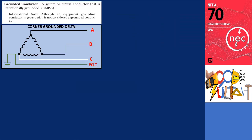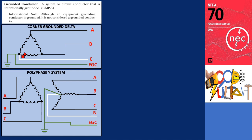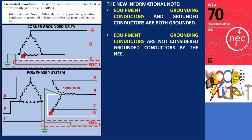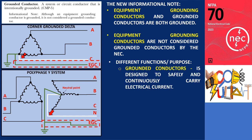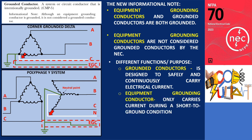The grounded conductor refers to a system or circuit conductor intentionally connected to the ground. In the provided illustration, a corner grounded delta configuration is depicted where phase C is connected to the ground; therefore, conductor C serves as the grounded conductor. Another illustration showcases a polyphase Y system, where the neutral conductor is the conductor connected to the neutral point of a system, intended to carry current under normal conditions. Since the neutral point is intentionally connected to the ground, the grounded conductor in this illustration is the neutral conductor. However, the equipment grounding conductor is also grounded, but is not considered a grounded conductor — this distinction helps electrical practitioners differentiate grounded conductors from grounding conductors. Grounded conductors are designed to safely and continuously carry electrical current, while equipment grounding conductors only carry current during a short-to-ground fault condition.